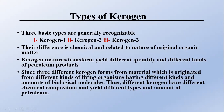There are three basic types of kerogen generally recognized: Kerogen 1, Kerogen 2, and Kerogen 3. There is also Kerogen 4 mentioned in some references, but it is not much discussed in general books. The difference is chemical and related to the nature of the original organic matter — different kerogen types have different sources.